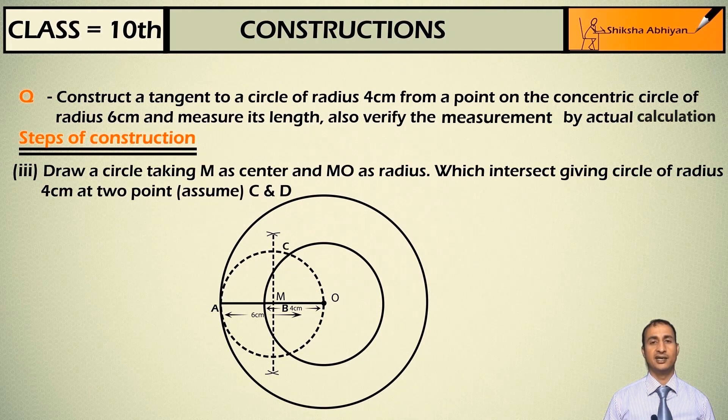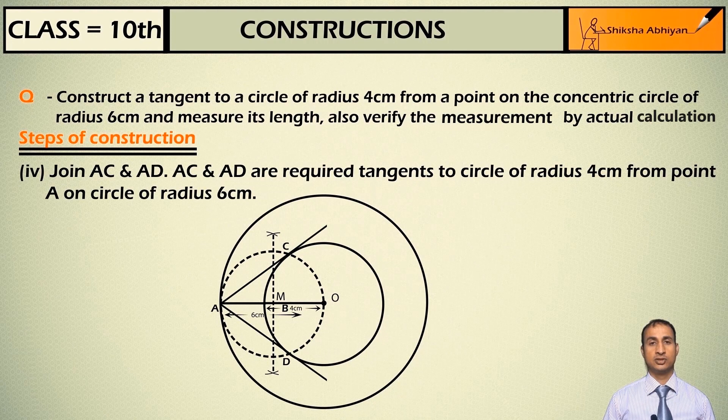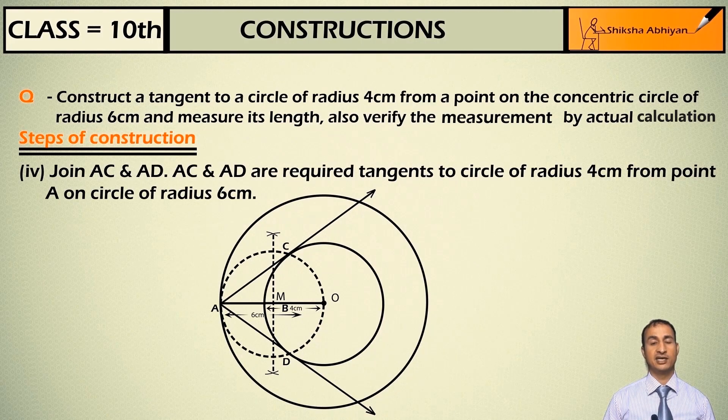Now join AC and AD. So this AC and AD are the required tangents. Point A is on the 6 cm circle and these are tangents to the 4 cm circle.